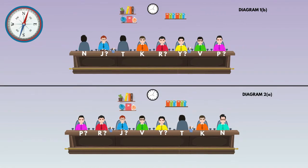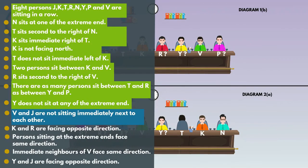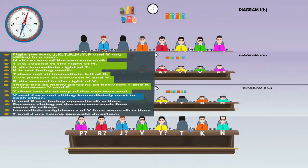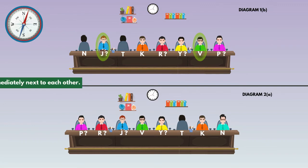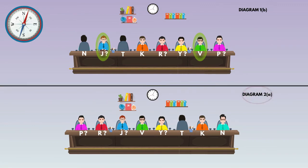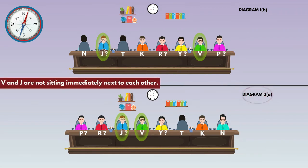Go to the next statement: V and J are not sitting immediately next to each other. In diagram 1B, V and J are not adjacent — valid. In diagram 2A, V and J are sitting immediately next to each other — so cancel this diagram. Only diagram 1B remains.